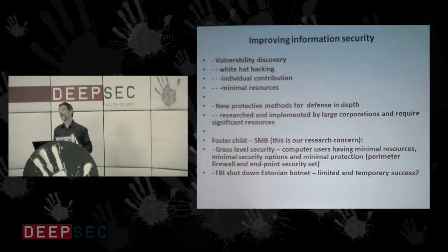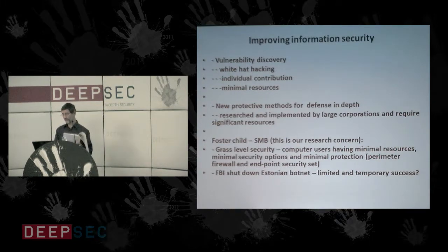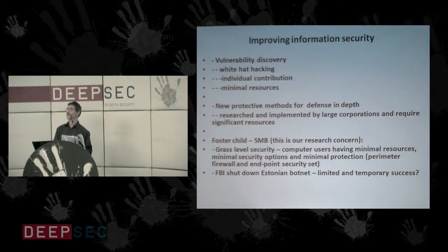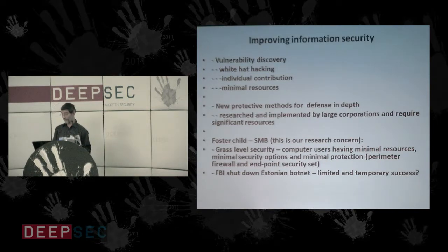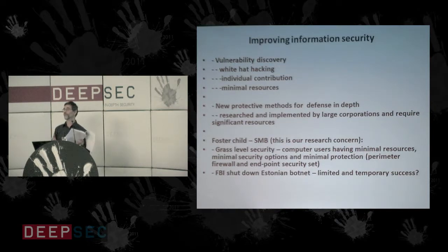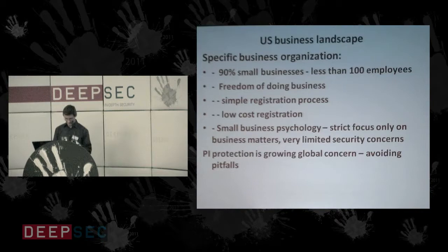To show how important grass-level security is, we can check, for instance, the recent FBI case where they shut down an Estonian botnet of 2 million computers and shut down the command and control center and Internet service providers. It took a couple of years. However, what is going to happen next? If computers remain vulnerable, a botnet could be re-created within one or a couple of years. On the following slide, you can see characteristics of the U.S. business landscape which define the U.S. security scope.